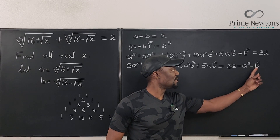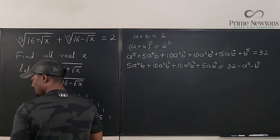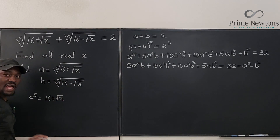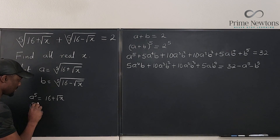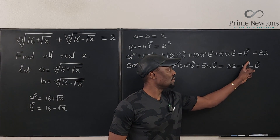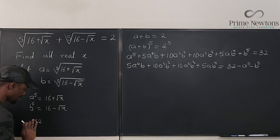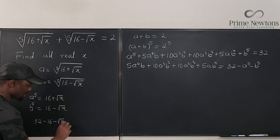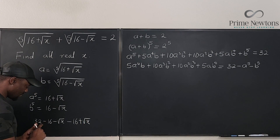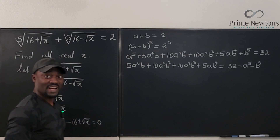Let's compute 32 − a^5 − b^5. We know a^5 = 16 + √x and b^5 = 16 − √x. So it becomes: 32 − (16 + √x) − (16 − √x) = 32 − 16 − 16 − √x + √x = 0. Everything on the right-hand side turns out to be zero.